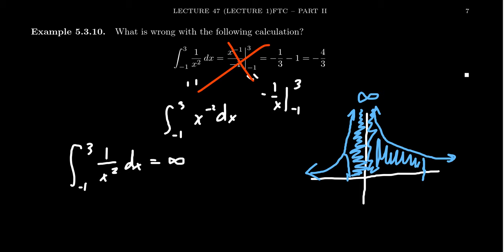So what's the difference here? Why did the fundamental theorem of calculus not work? And the issue has to do with continuity. Is the function continuous on the interval negative 1 to 3? And the answer, of course, for this function is no.